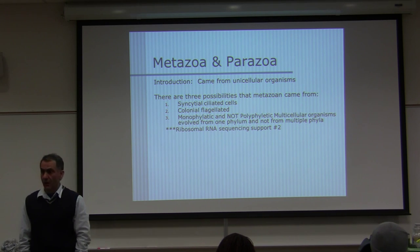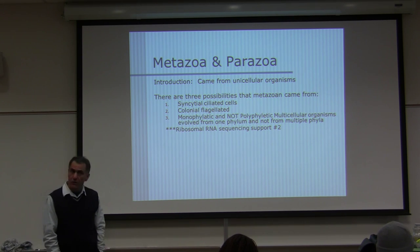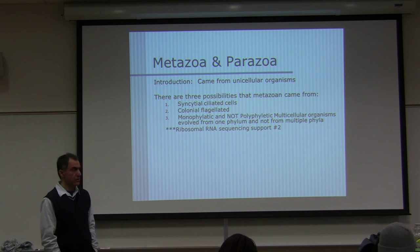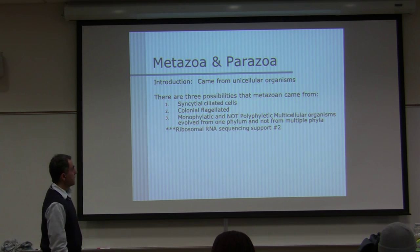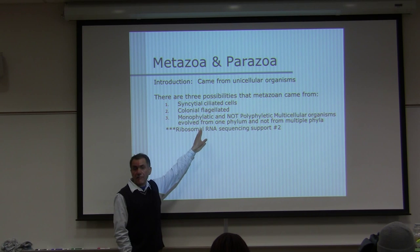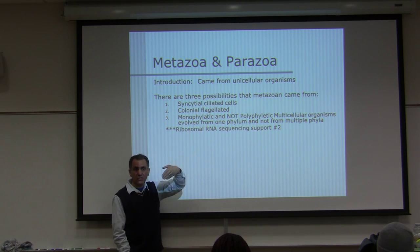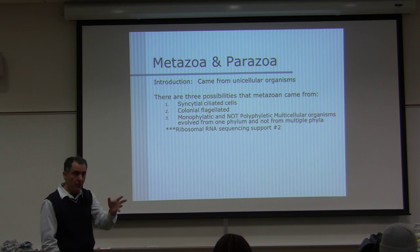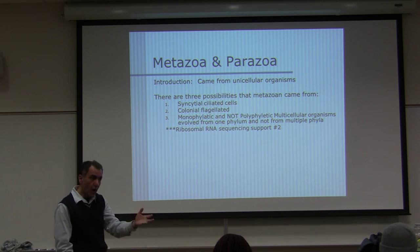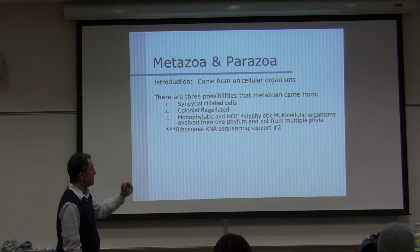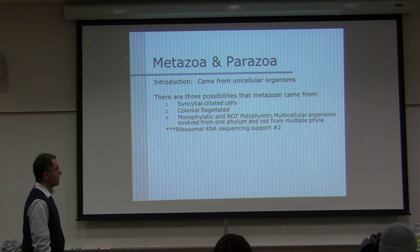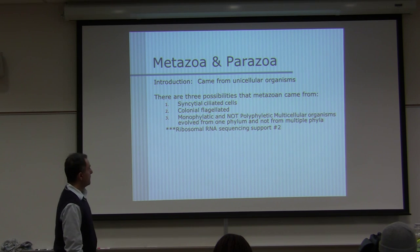The second theory is colonial flagellated, like Volvox — that was a lab practical example. And the third is monophyletic, meaning multicellular organisms came from one phylum. Before, it was considered polyphyletic, but now it's accepted that multicellular organisms evolved from one phylum, not multiple.